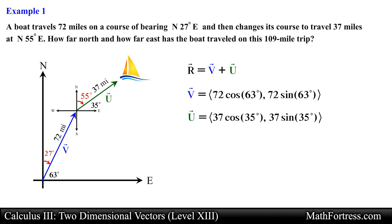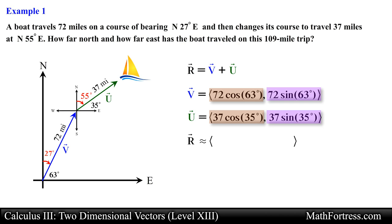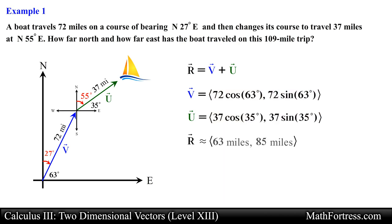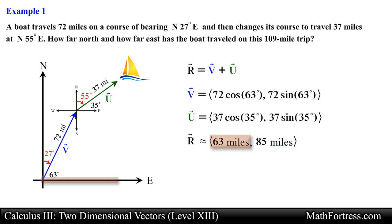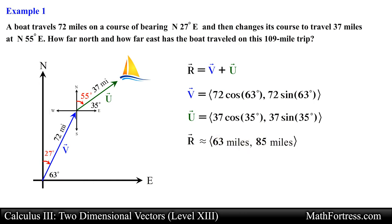Using 63 degrees for vector v we obtain the components. Adding vector v and u component-wise, we obtain 63 miles for the x component and 85 miles for the y component. So the boat traveled 63 miles towards the east and 85 miles towards the north.